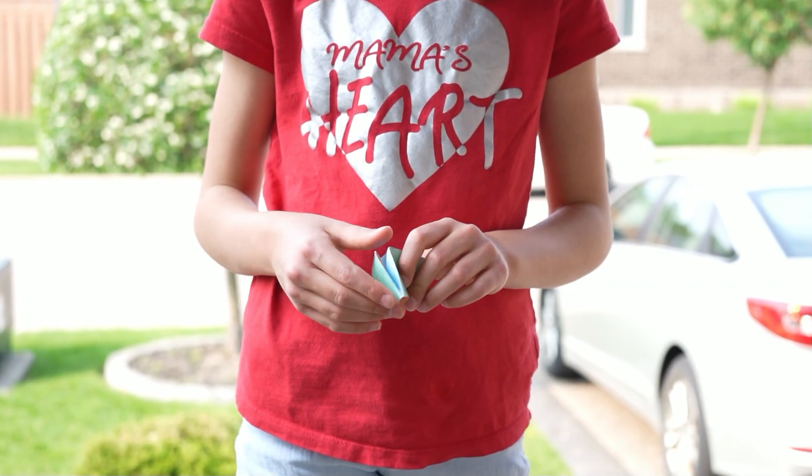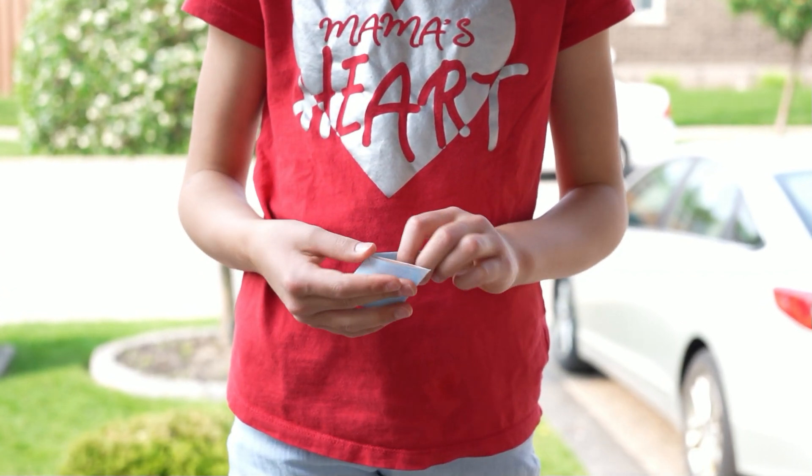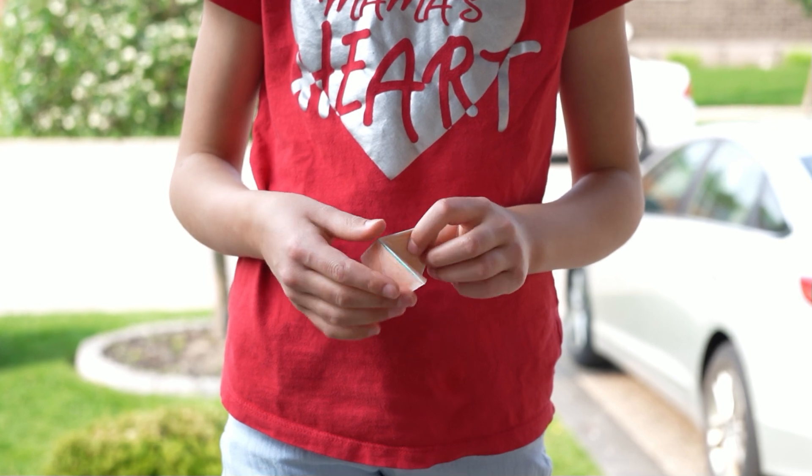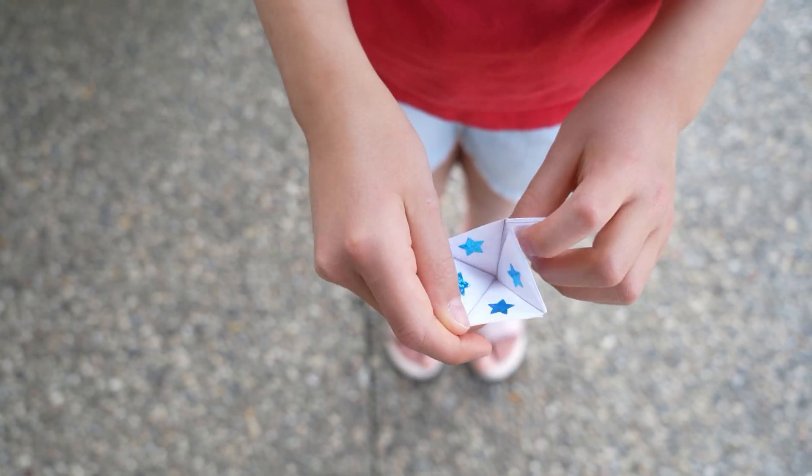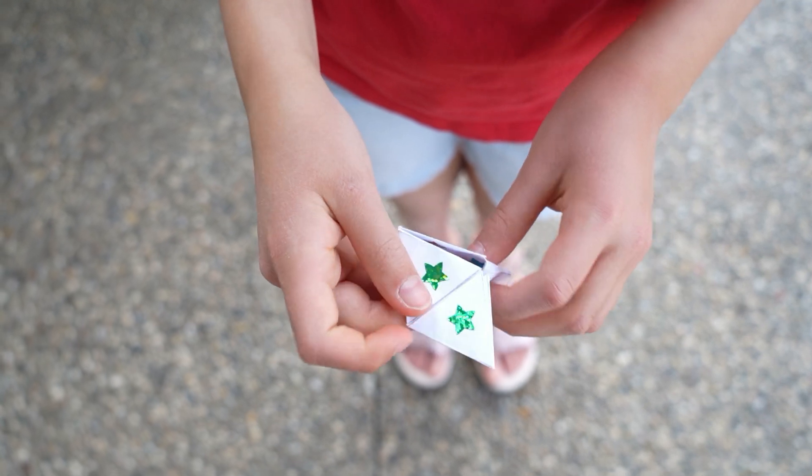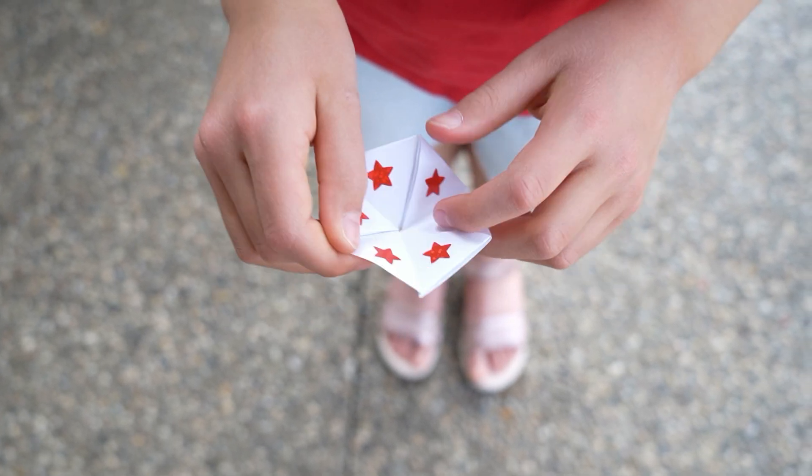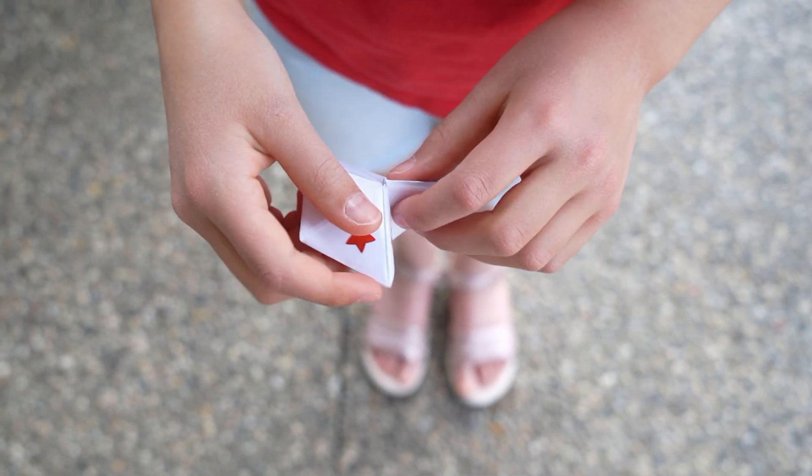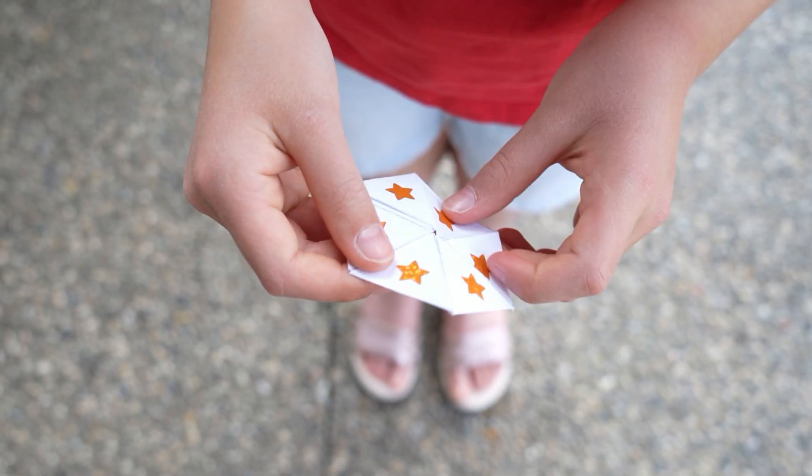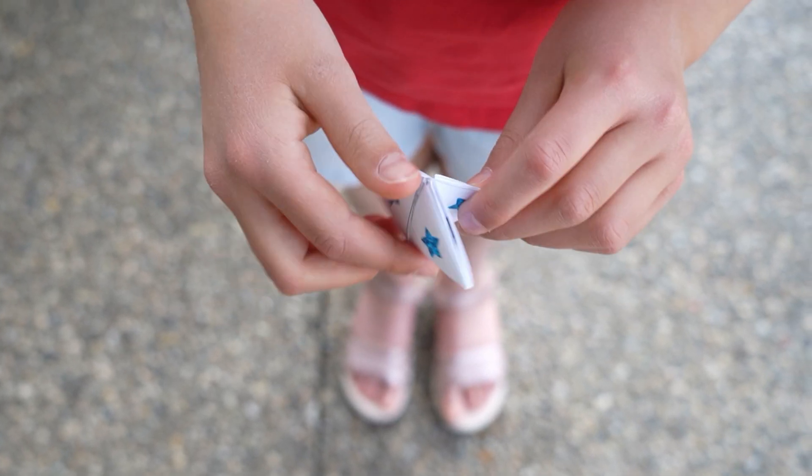This hexaflexagon has three different faces and is therefore called a trihexaflexagon. Another version that has six faces is called a hexahexaflexagon. We'll look at how to construct a hexahexaflexagon in another video, but here, let's build a trihexaflexagon.